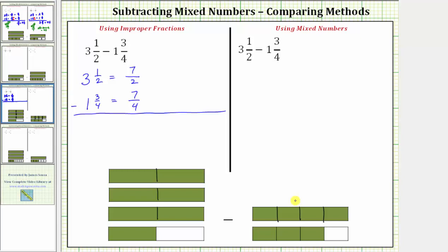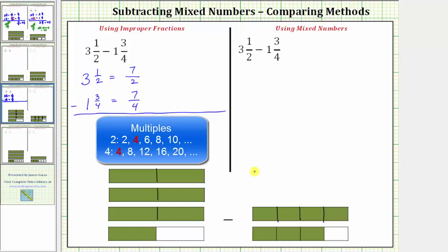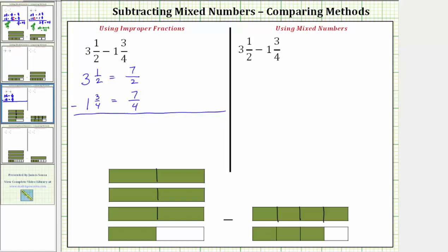The next step is to obtain a common denominator, hopefully the least common denominator. The reason we need to do this is so that all of the pieces are the same size. The least common multiple of two and four is four, which means the least common denominator is four. If we were not able to determine the least common multiple, we could always multiply the two denominators and use that as a common denominator. Notice two times four is equal to eight, so we could use eight as a common denominator, but that would require more simplifying later. Let's use the least common denominator of four.